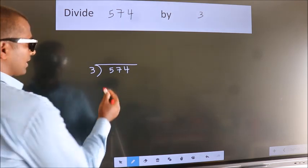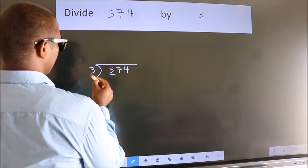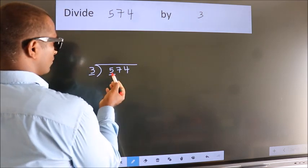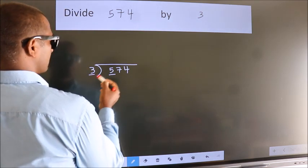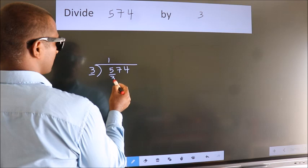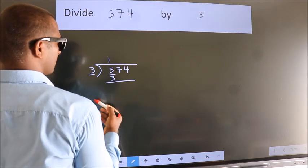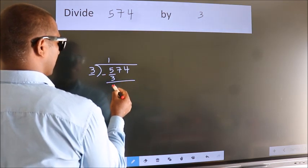Next, here we have 5, here 3. A number close to 5 in 3 table is 3 times 1 is 3. Now, we should subtract. We get 2.